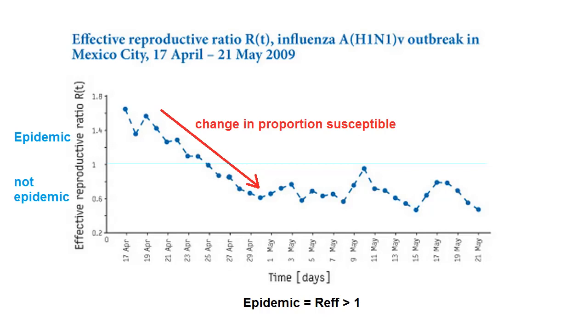The other way we can change the proportion of susceptibles is to vaccinate. If our vaccine is only 28% effective, as the flu vaccine is for the 2014-2015 season,